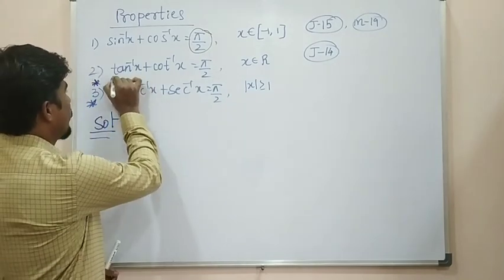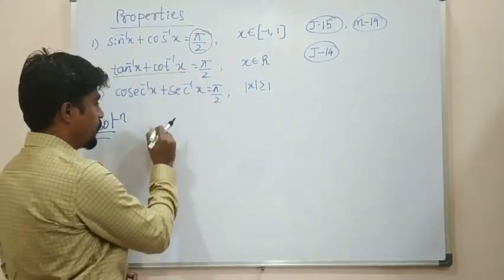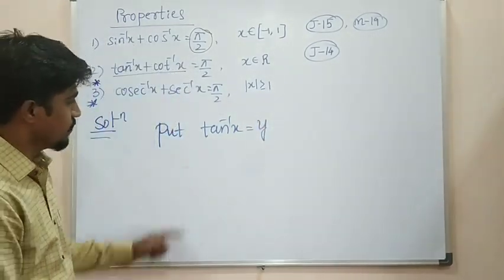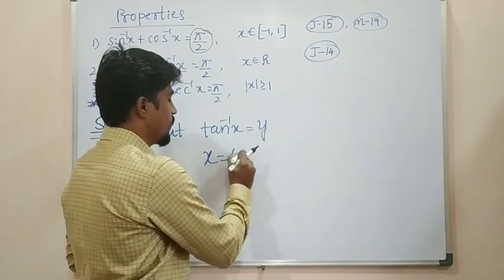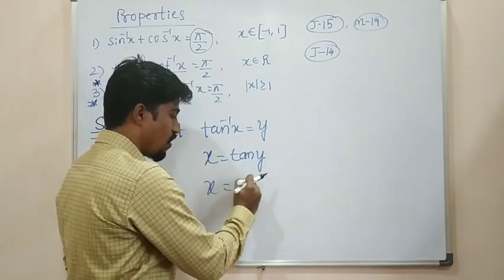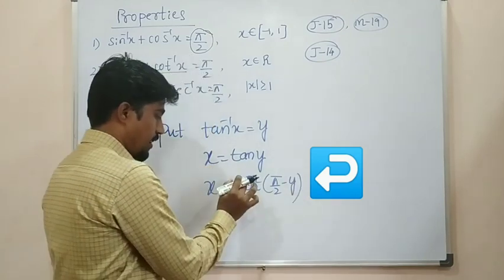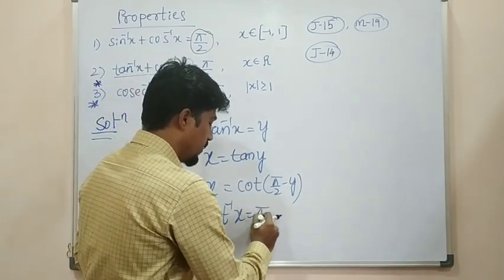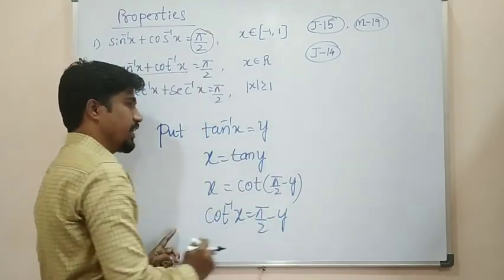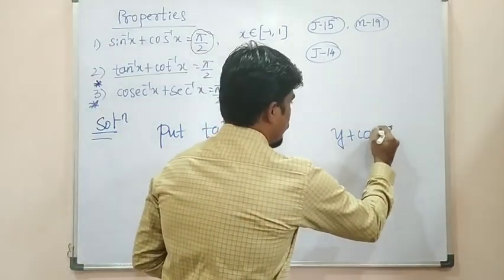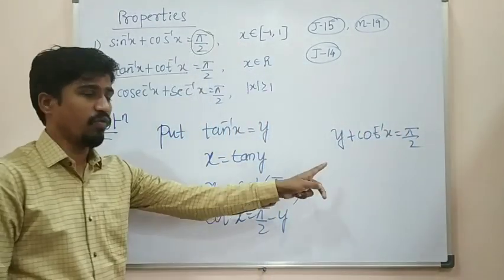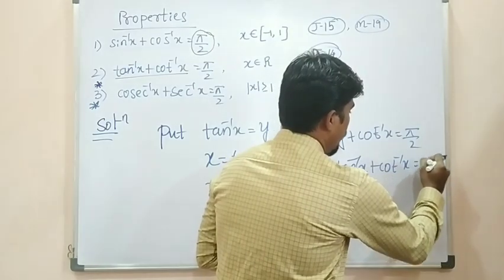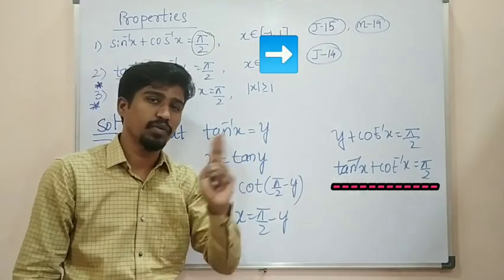The second property: tan inverse x plus cot inverse x is equal to π/2. Put tan inverse x equal to y, so x is equal to tan y. Now, tan y can be written as cot(π/2 − y). If cot inverse x is equal to π/2 minus y, then y plus cot inverse x is equal to π/2. Substitute the value of y: tan inverse x plus cot inverse x is equal to π/2. This question was also asked in July 2014 for 2 marks.